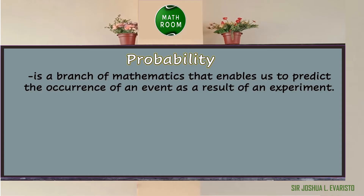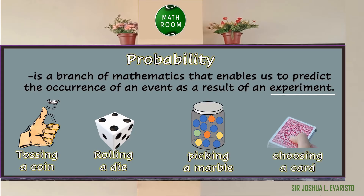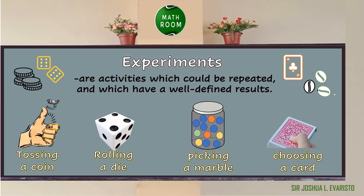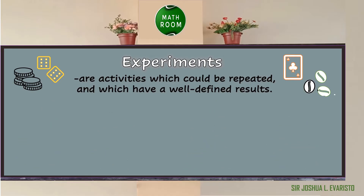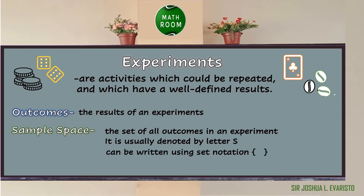Probability is a branch of mathematics that enables us to predict the occurrence of an event as a result of an experiment. Different examples of experiments in probability are tossing a coin, rolling a die, randomly picking a marble in a jar, and choosing a card in a deck of cards. These experiments are activities which could be repeated and which have well-defined results. The results in an experiment is what we call the outcomes. The set of outcomes in an experiment is the sample space, usually denoted by letter S and can be written using set notation.